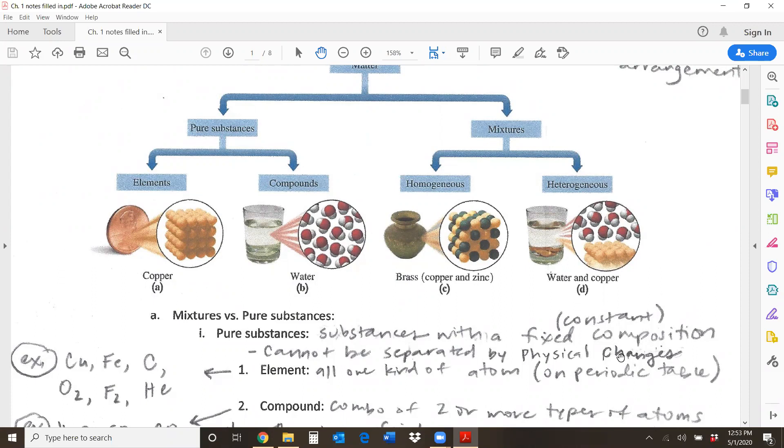These cannot be separated by physical changes. We'll talk more about that here in a little bit, but you have to chemically change a pure substance to get it to break down like water. You need to run electricity through it to break it down into hydrogen and oxygen. And that is not a physical change. Physical change would mean that you could just evaporate it. And that would not break down something like water.